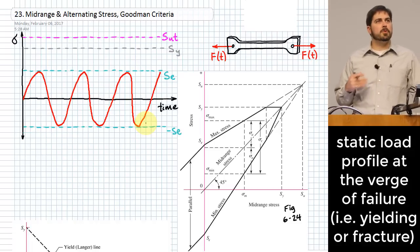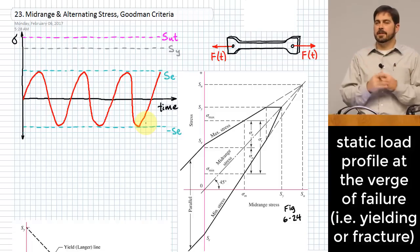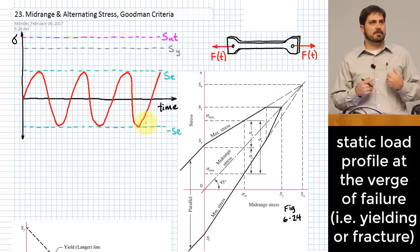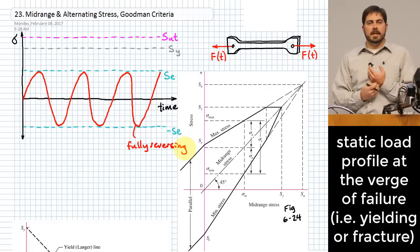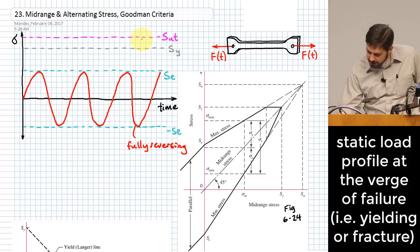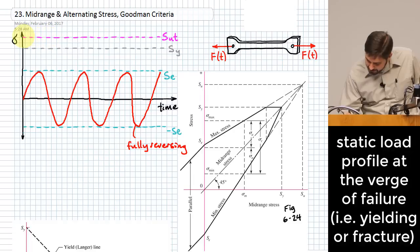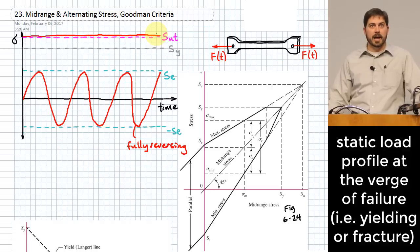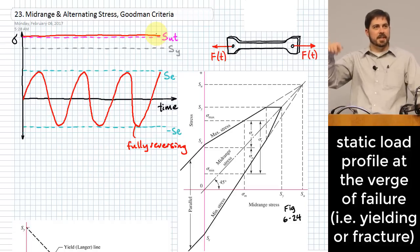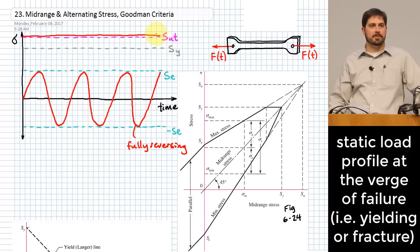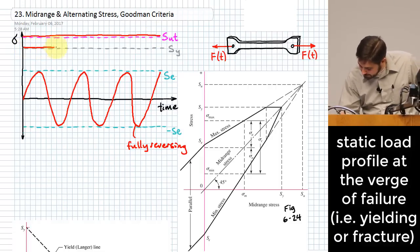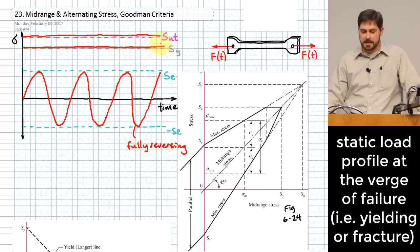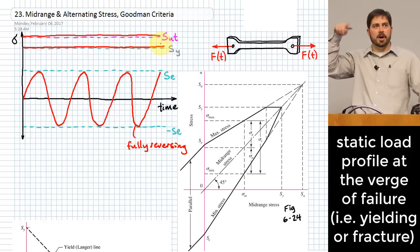What if you had a purely static load — just a tensile load in a part? The answer is a little tricky. It's going to be either a stress level at S_UT, where it fractures, or at the yielding stress level where we say it has failed. Neither requires oscillation.